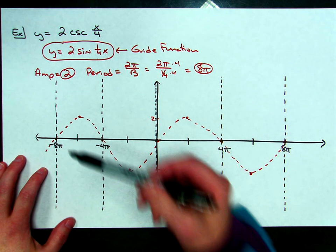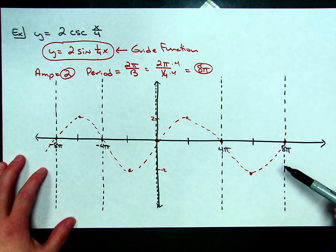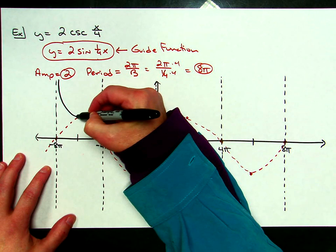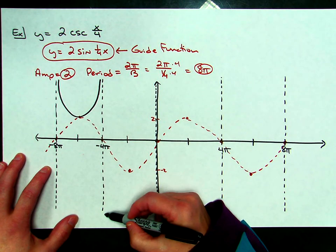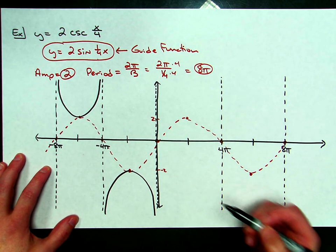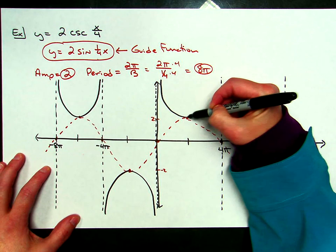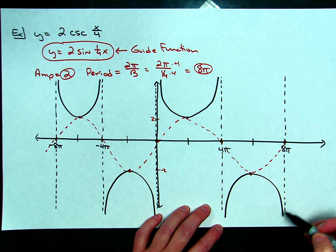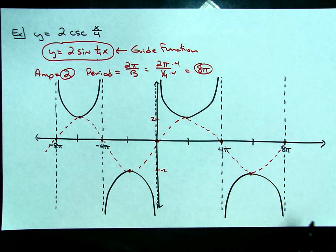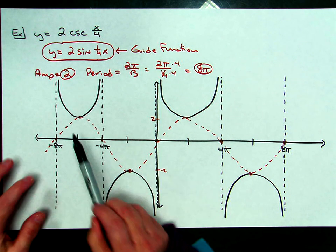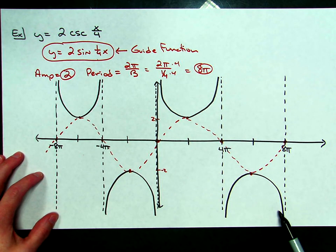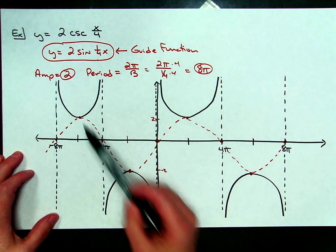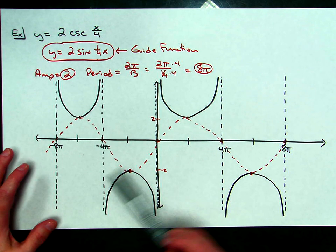Your cosecant function will be at each one of these maxes and mins on the sine wave. This one is up here — that'll be a min — and it's going to hug those two asymptotes. Coming down to this spot, it'll be a max, hugging the two asymptotes. Over here at this peak, hug the asymptotes, and in the last section, making that a max right there and hugging those two asymptotes. It is just a rough sketch of the cosecant graph — the only parts are the solid lines and the vertical asymptotes. The red sine wave is just used to guide where those cosecant parts of the graph should be placed.